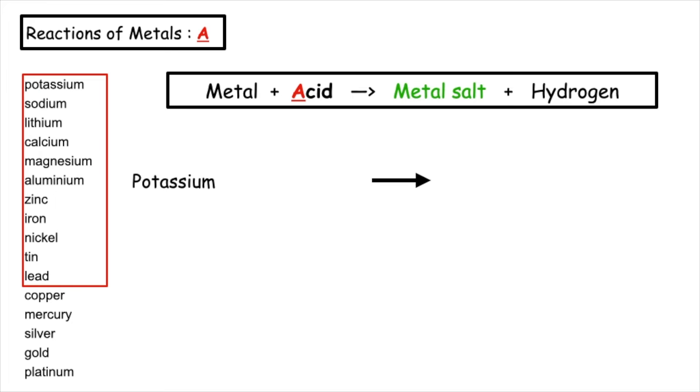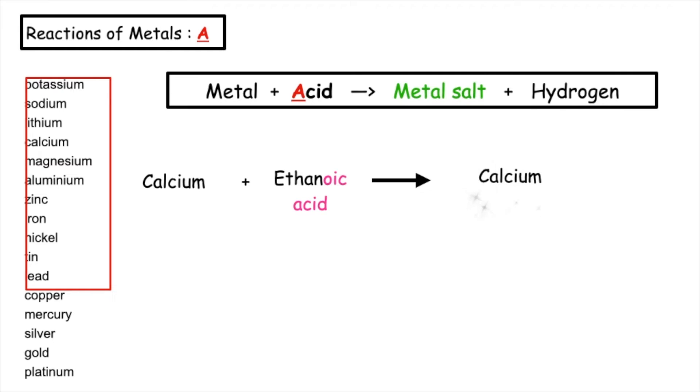Let's have a go at writing the name of the salt for this first example. If we have potassium plus methanoic acid, the name of the salt would be potassium methanoate. If we were to react calcium with ethanoic acid, we would end up with calcium ethanoate.